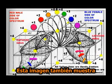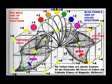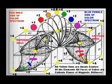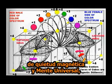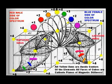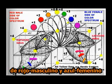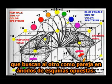This image also shows how the sexless inert gases of the interior horizontal cathode plane, known as the south inertial plane in Russellian science, are dividing the invisible white light of magnetic stillness in universal mind into sexed conditions of male red and female blue electric lights, which are seeking each other as mates in opposite corner anodes.